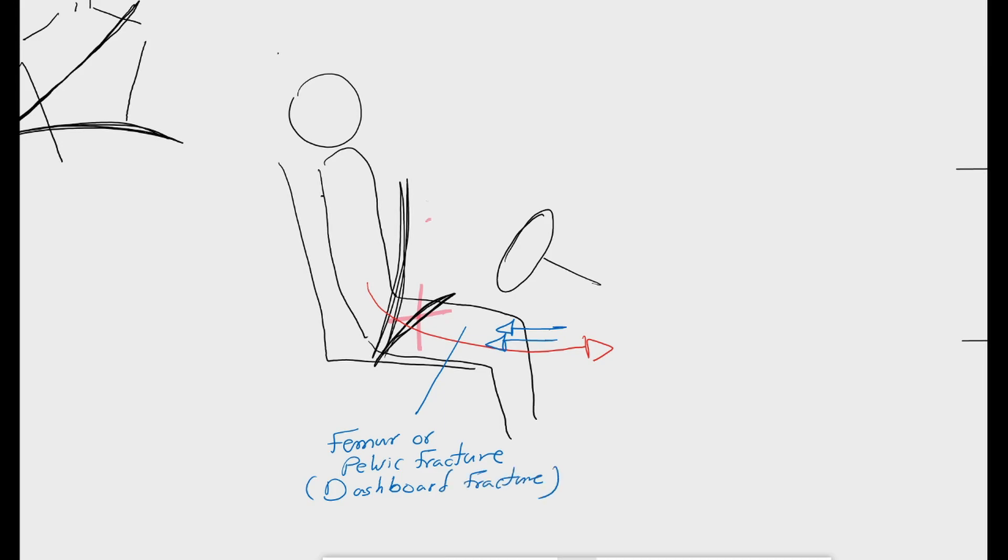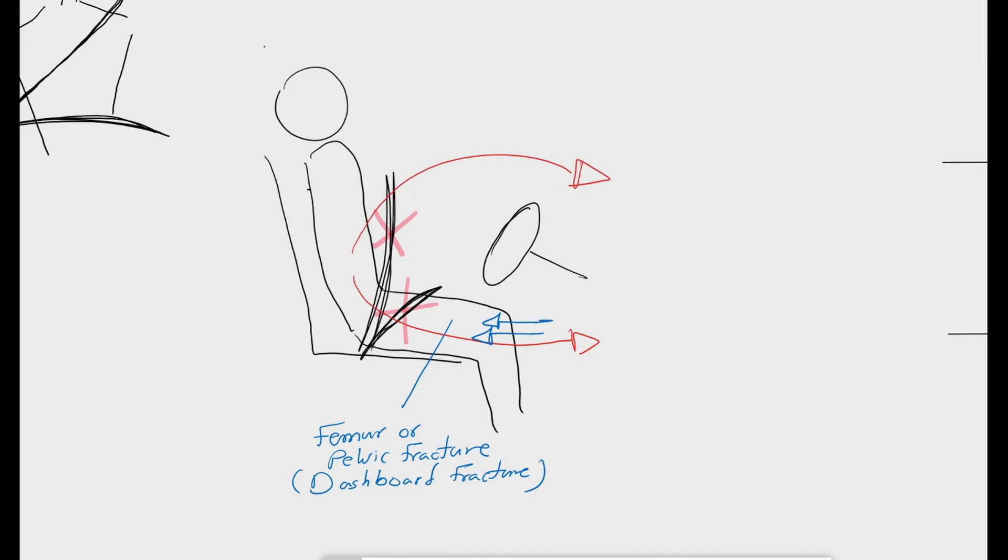On the other hand, when the upper component is absent, like in a lap seatbelt, during direct collision, the body will be thrown forward and above. The thorax and the abdomen will hit the steering wheel directly, leading to rib fractures, pneumothorax, lung or splenic injury.